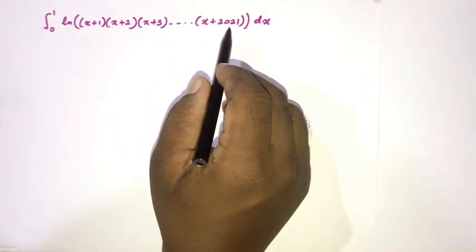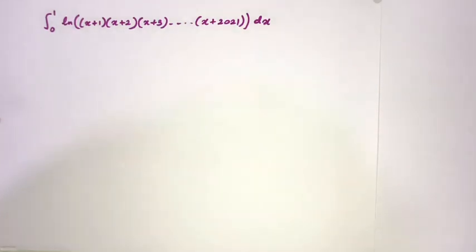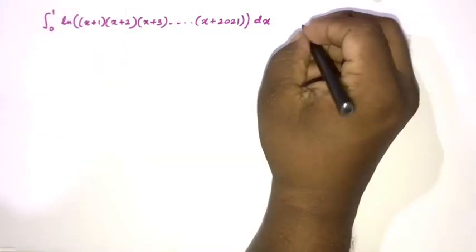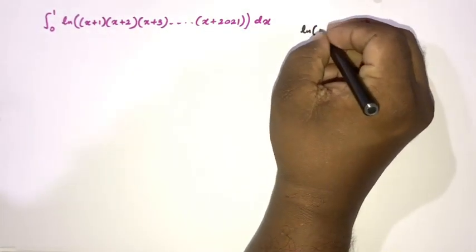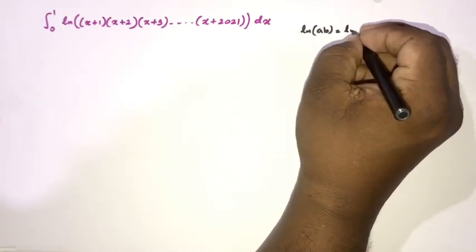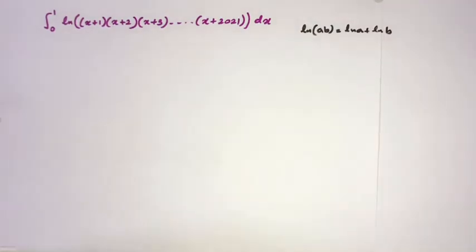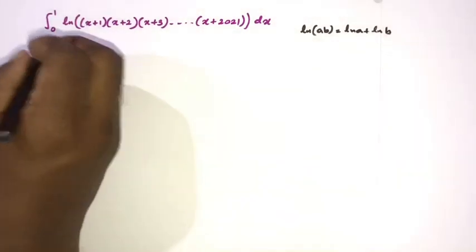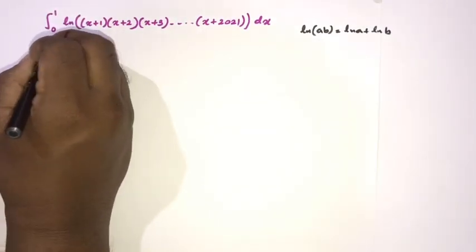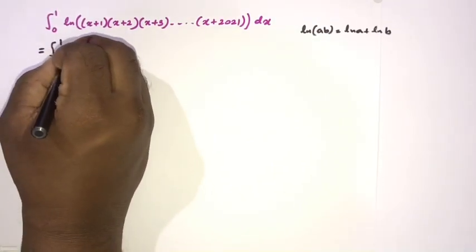...all the way up to (x+20)(x+21). To begin, we use the property of natural log: if we have ln(a times b), we can write this as ln(a) plus ln(b). So here we can write our integral as the sum of separate natural log integrals.